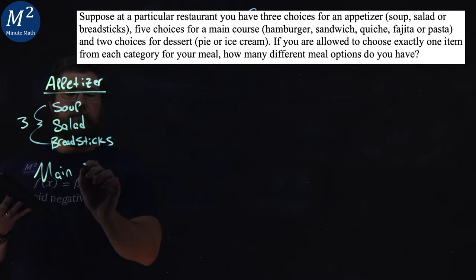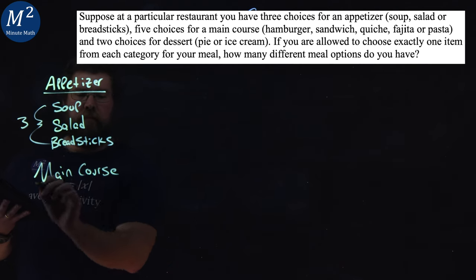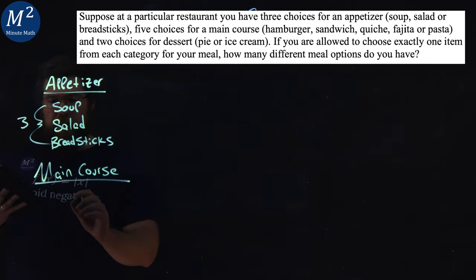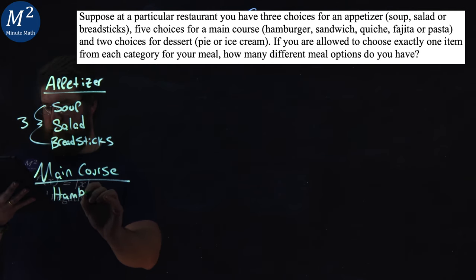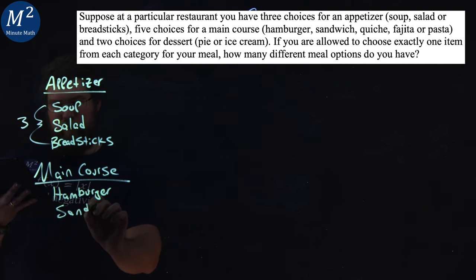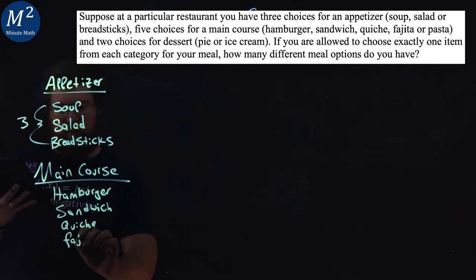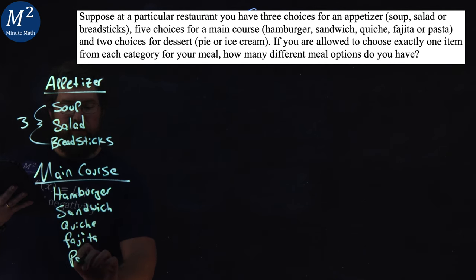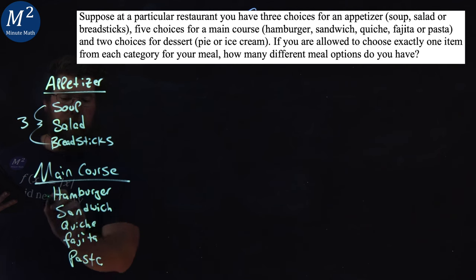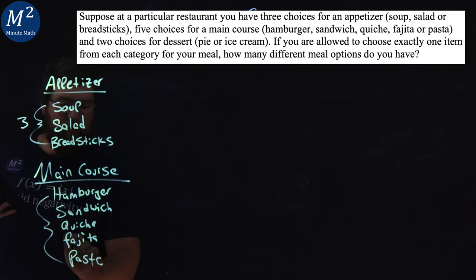For the main course, we have five choices: hamburger, sandwich, quiche, fajita, or pasta. And that's our five choices — one, two, three, four, five.